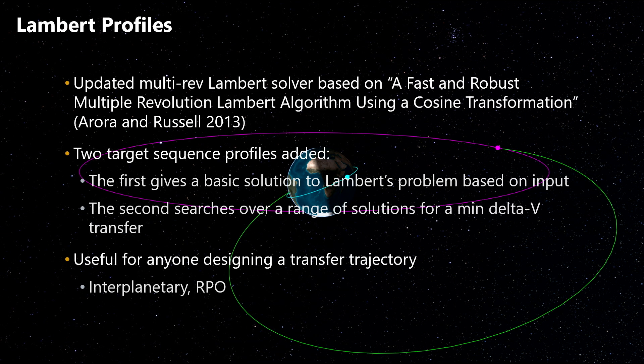Basically, for anyone designing any kind of transfer trajectory, these are useful for you. You can use them in a scripting context where you find your first guess at your trajectory, and then throw it at a differential corrector to find the maneuver in the full force model. Especially if you're doing interplanetary transfers or any kind of RPO transfers, these will definitely be useful for you.